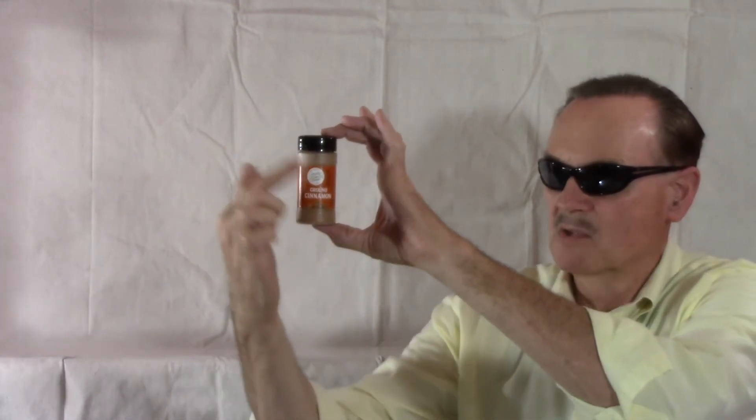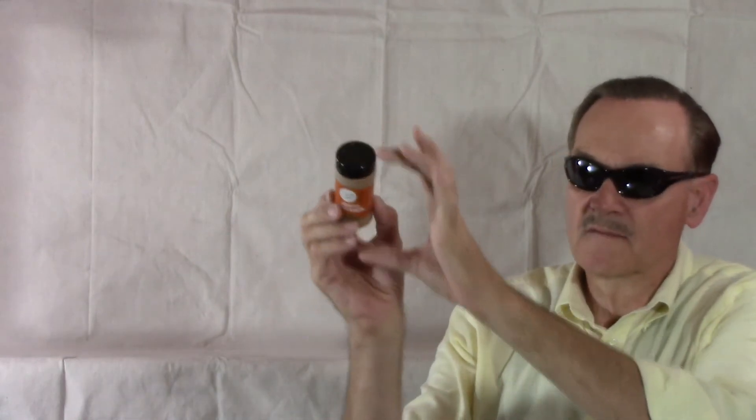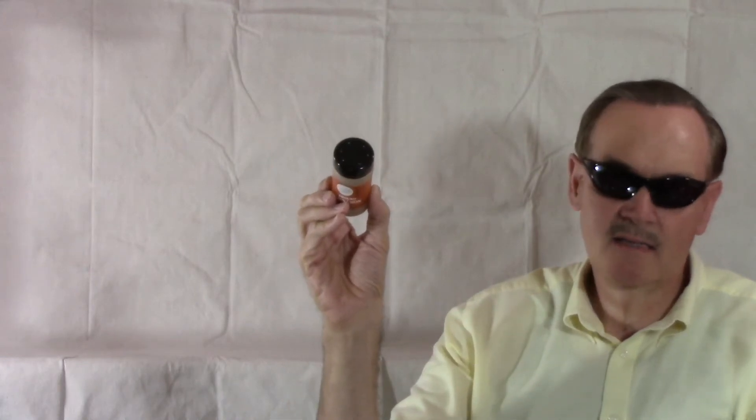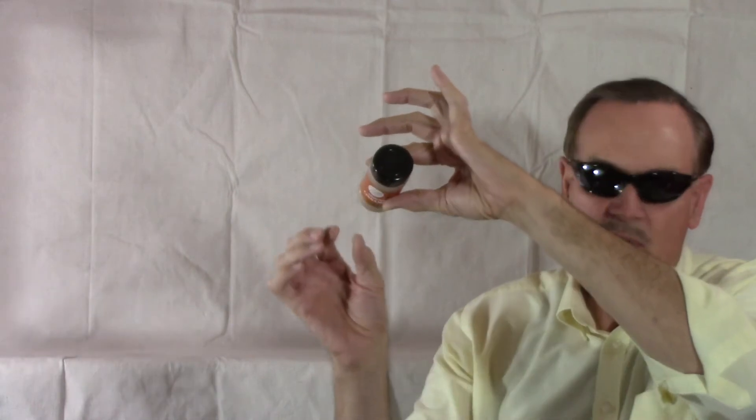You can do the same with something that is round. This is simply just a cinnamon shaker here. It has cinnamon powder. Now if you look at it straight like this it almost looks like a rectangle. If I hold it straight here it's a circle. If I raise it like this the circle flattens into an oval and you see part of the back.